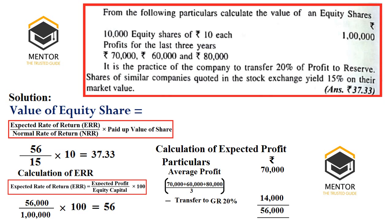Till now, in these two questions we have used the rate of earnings formula. One more formula we discussed is rate of dividend — that formula we did not use, because the usage of formula is based on the information provided in the question. In these two questions, information was provided based on rate of earnings. Now we will take up one more question where we will see which formula to apply.